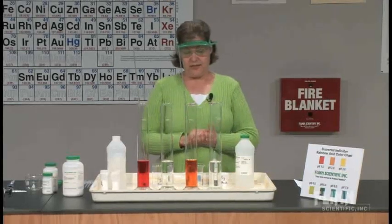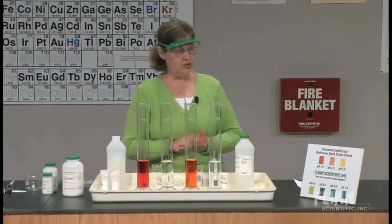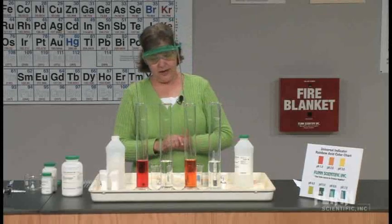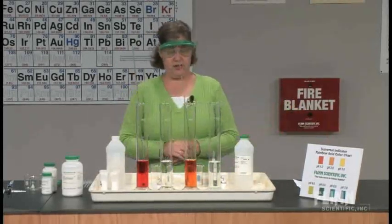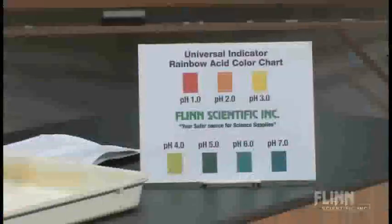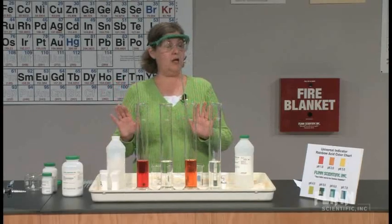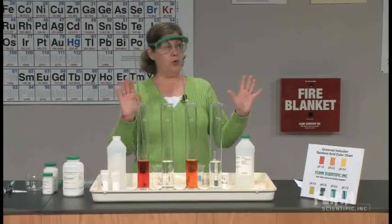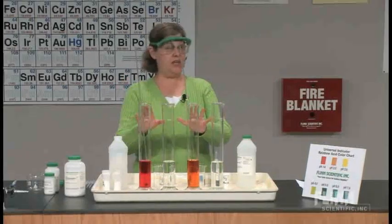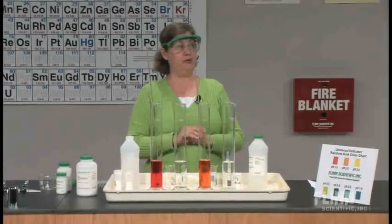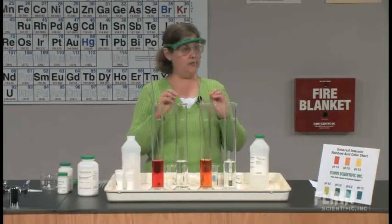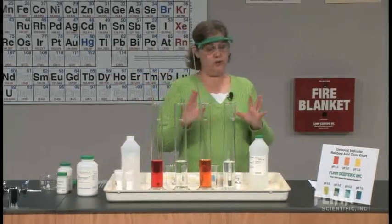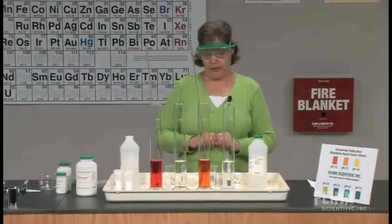For the acetic acid, on the other hand, we have an orange color — it looks like a pure orange color to me. According to our color chart, that's pH 2. So we have our first difference already: we have the same concentration — one molar in each case — and the same amount, but we clearly have a different pH. That's one of the differences between strong and weak acids.